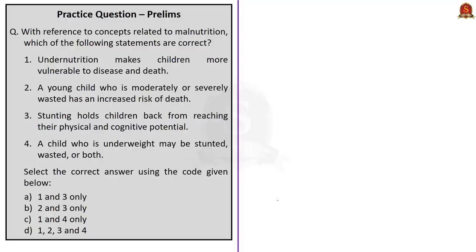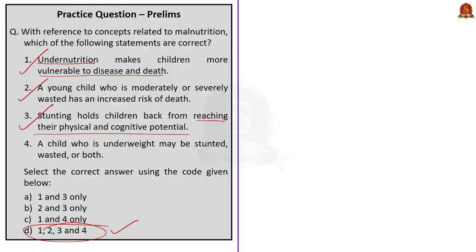Question 2: with reference to concepts related to malnutrition, which of the following statements are correct? Statement 1: undernutrition makes children more vulnerable to disease and death — correct. Statement 2: a young child who is moderately or severely wasted has an increased risk of death — correct. Statement 3: stunting holds children back from reaching their physical and cognitive potential — correct. Statement 4: a child who is underweight may be stunted, wasted, or both — also correct. So the correct answer is option D, all four statements 1, 2, 3, and 4. Here you might anticipate questions on indices, but the UPSC may surprise you with such basic concept-based questions.